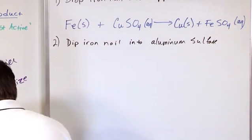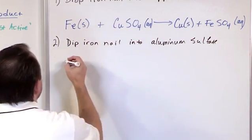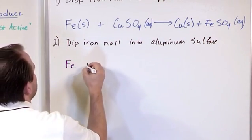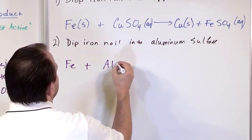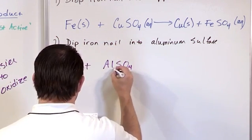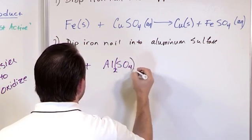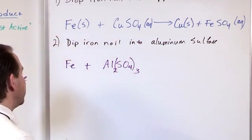So let's take a second to write the reaction down. So we're going to have again an iron nail plus aluminum sulfate. So we're going to have an iron nail plus Al2(SO4)3, actually. That's aluminum sulfate.